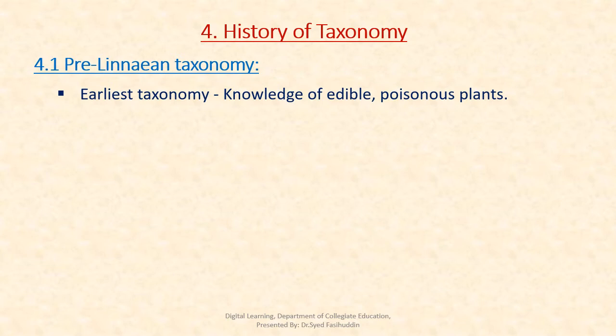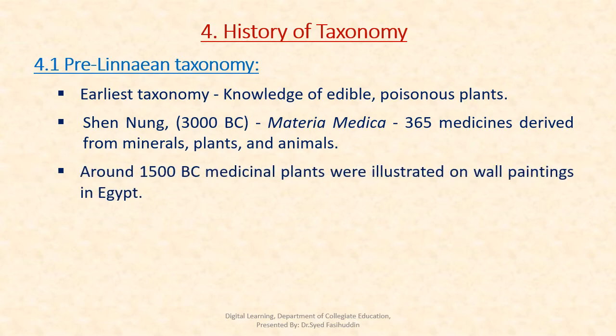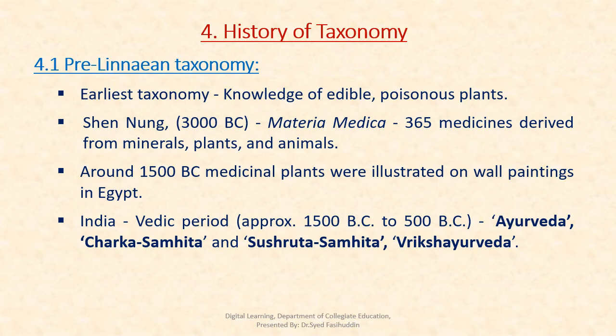The history of taxonomy: the earliest taxonomy was usually based on knowledge of edible and poisonous plants. In Materia Medica, a book compiled by Shen Nong, an emperor from China, 365 medicines derived from minerals, plants and animals were described. Around 1500 BC, medicinal plants were illustrated on wall paintings in Egypt. In India during the Vedic period, classical works like Ayurveda, Charaka Samhita, Sushruta Samhita, and Vrikshayurveda are important contributions.